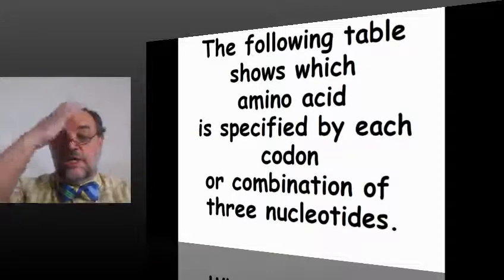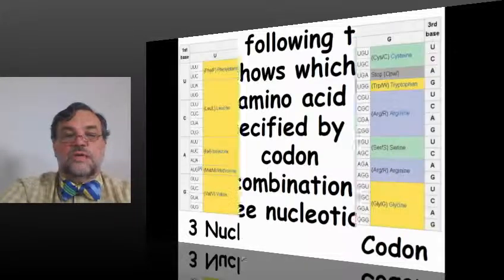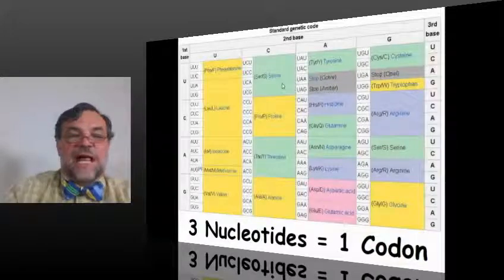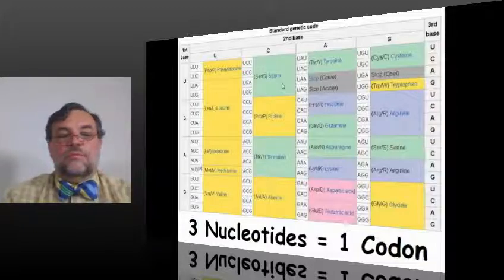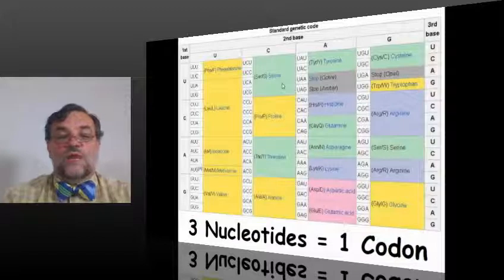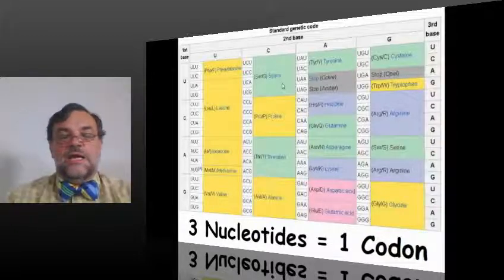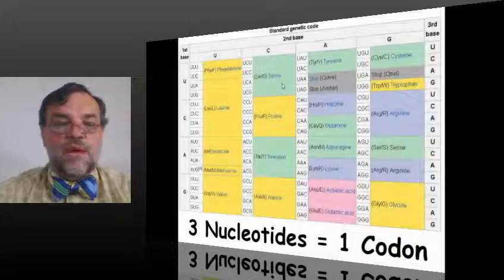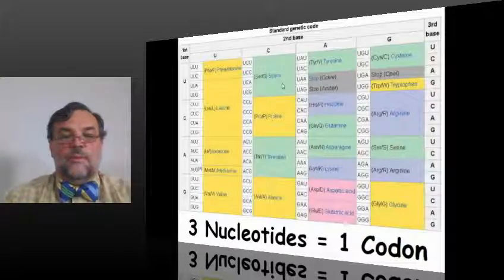The following table shows which amino acid is specified by each codon or combination of three nucleotides. On the table you can see on the left side, the left column, it says the first base. Across the top we have column headers for the second base, and on the right side we pick up the third base again in rows. We have a U instead of a T because this happens with RNA. When DNA information is passed over to RNA, the T's become U's.